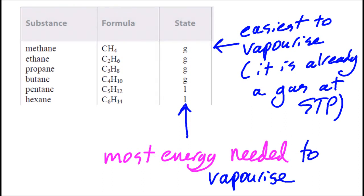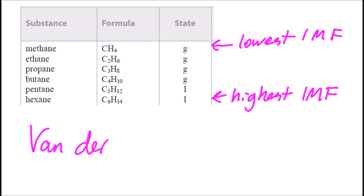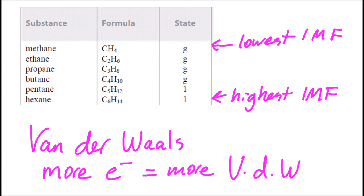Now, the intermolecular forces in the alkanes are highest in hexane and lowest in methane. And that actual intermolecular force is van der Waals forces, or London dispersion forces, if you will. And simply, more electrons means more van der Waals. There are no other intermolecular forces of any importance in the alkanes.